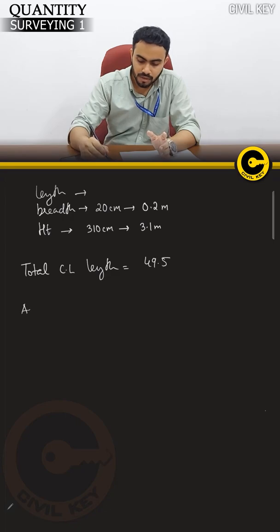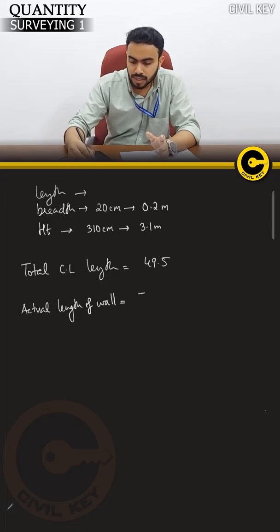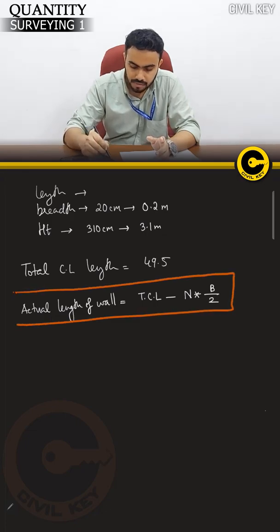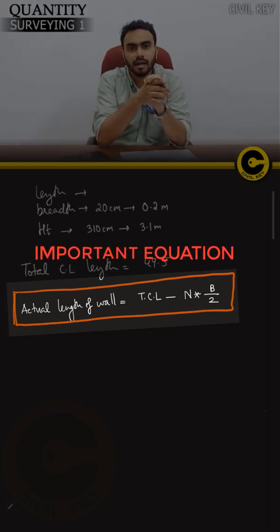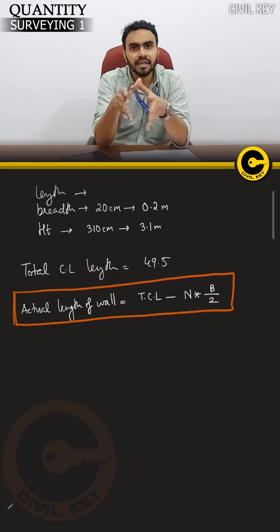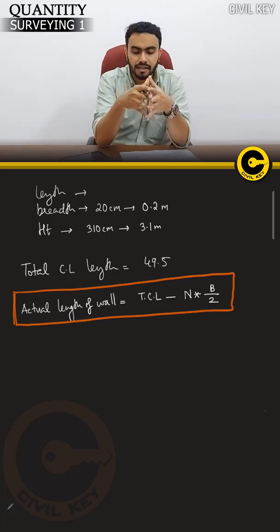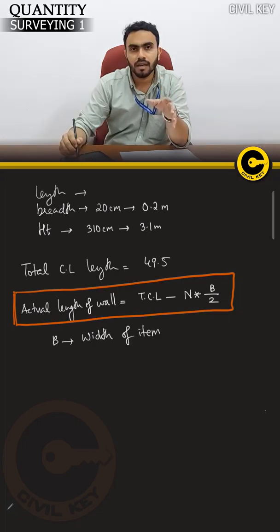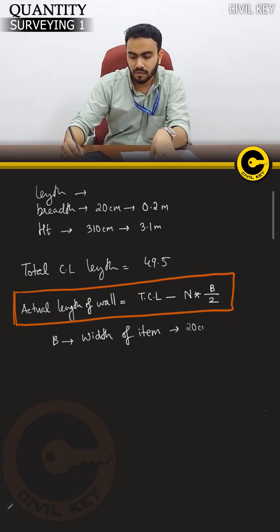Now we have the actual length of wall. The formula is: actual length of wall = total centerline length minus n into b divided by 2. This is the centerline method. Here, b equals the width of the wall, which is 20 cm or 0.2 meters.